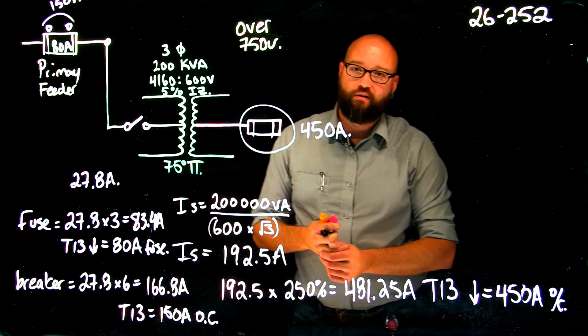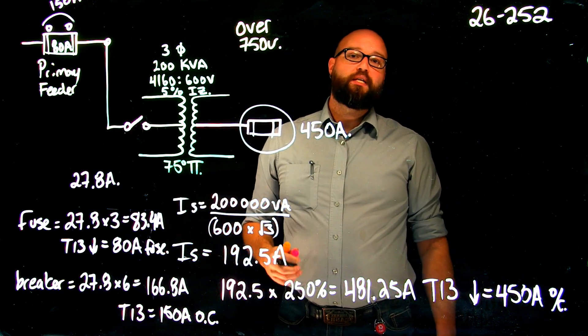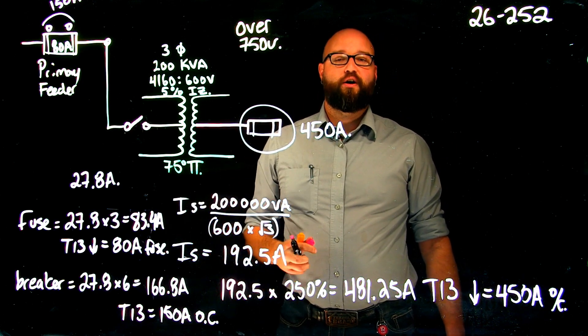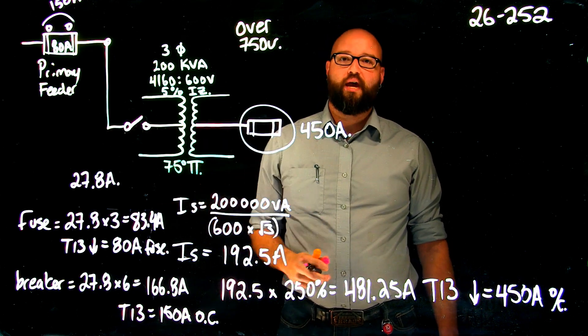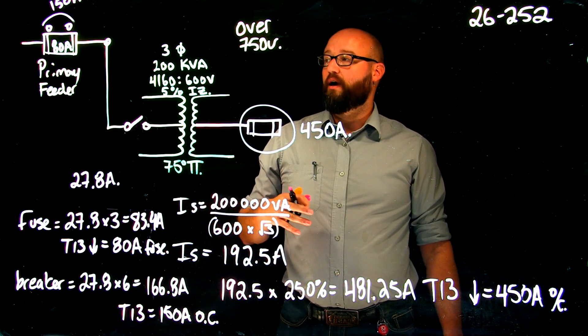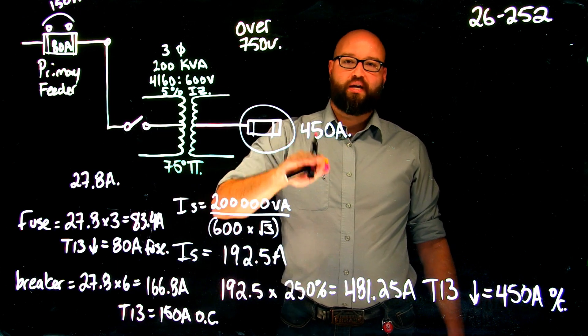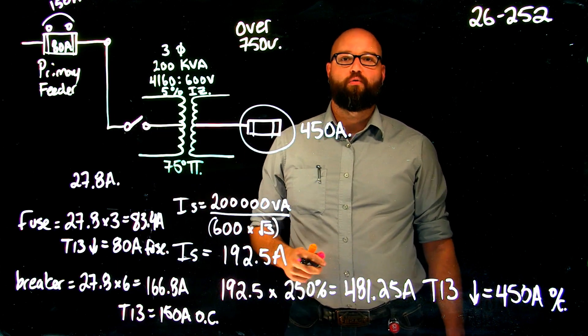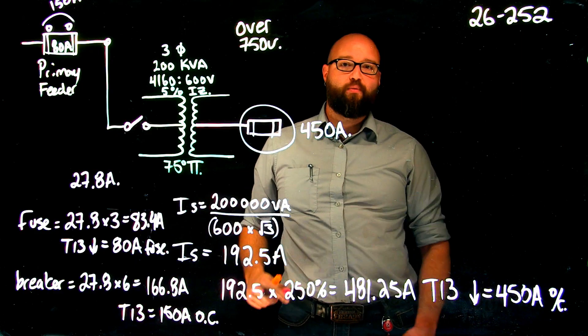In the next video, we'll take a look at a dry type transformer under 750 volts and calculate both scenarios again: primary feeder if this is omitted with secondary, and then just primary protection only. Hopefully this has helped and we'll see you next time. Thanks for watching.